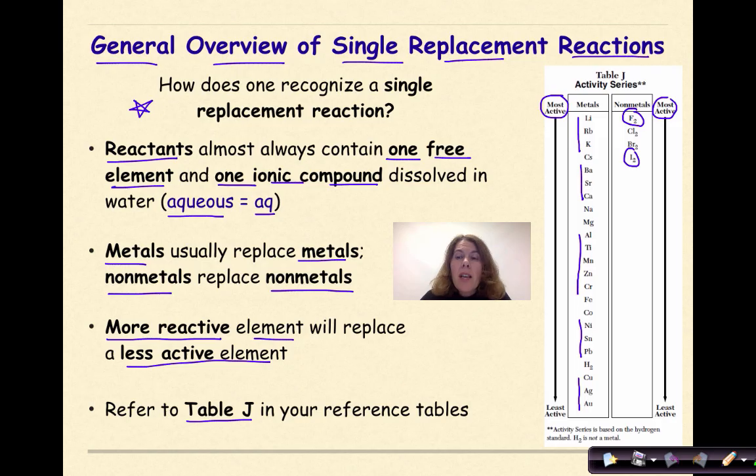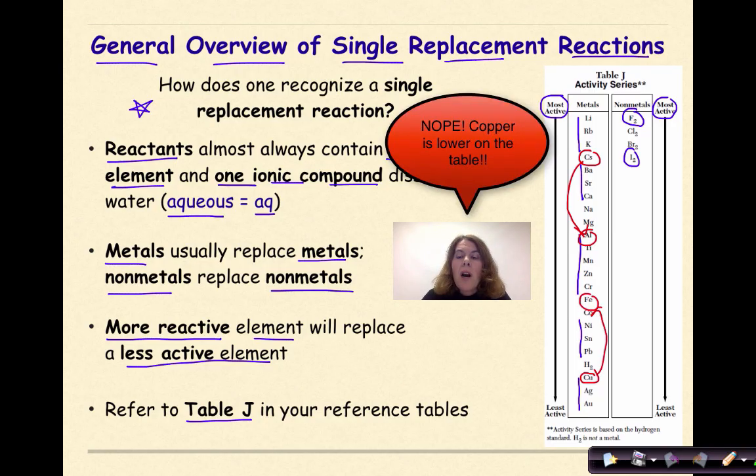So I could say, well, cesium can replace aluminum, because cesium is higher up on the table than aluminum, but copper cannot replace iron. That cannot happen, because iron is lower on the table.